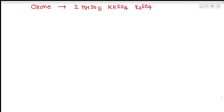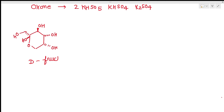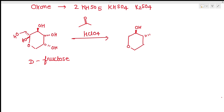Shi catalyst is prepared from D-fructose in two steps. The first step is the ketalization of D-fructose. D-fructose, with its OH groups arranged below and above the plane, is treated with a ketone in the presence of HClO₄. In this ketalization step, the OH groups react to form two ketal groups — the oxygen of each OH group forms a ketal, producing two ketal centers on the molecule.